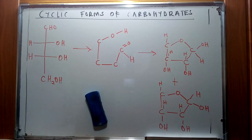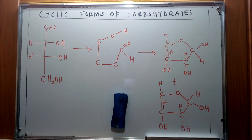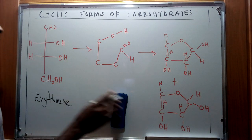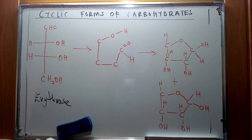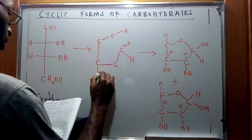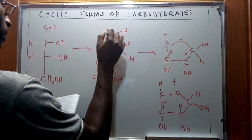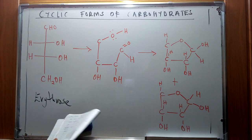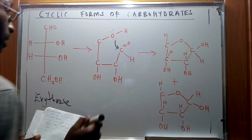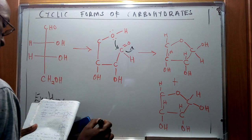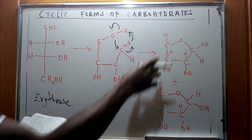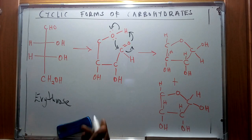Erythrose displays very specific unique characteristics. This is an aldose that is going to undergo a rearrangement to form a cyclic form. I'll illustrate the OH groups at specific points on the second molecule. We're going to have a rearrangement whereby a nucleophilic attack occurs at the carbonyl point, and a bond forms at that specific point to give the cyclic product.